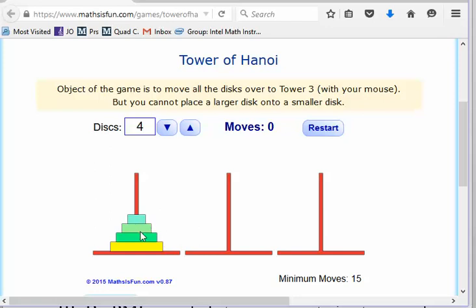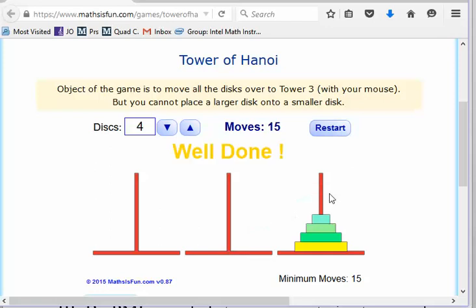So let me move these 3 disks to here, that should require 7 moves. Then I'm going to take this big heavy disk and move it over here, boom, and drop it on there. And then take my 7 moves to put this over to here, 1, 2, 3, 4, 5, 6, 7.